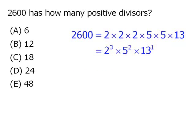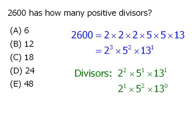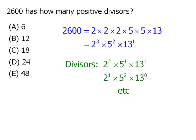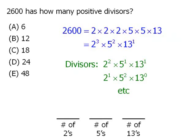For example, one possible divisor is 2 squared times 5 to the power of 1 times 13 to the power of 1. Another possible divisor is as follows, and so on. So when determining the number of divisors of 2600, we need to determine how many 2s, how many 5s, and how many 13s will be in our product.